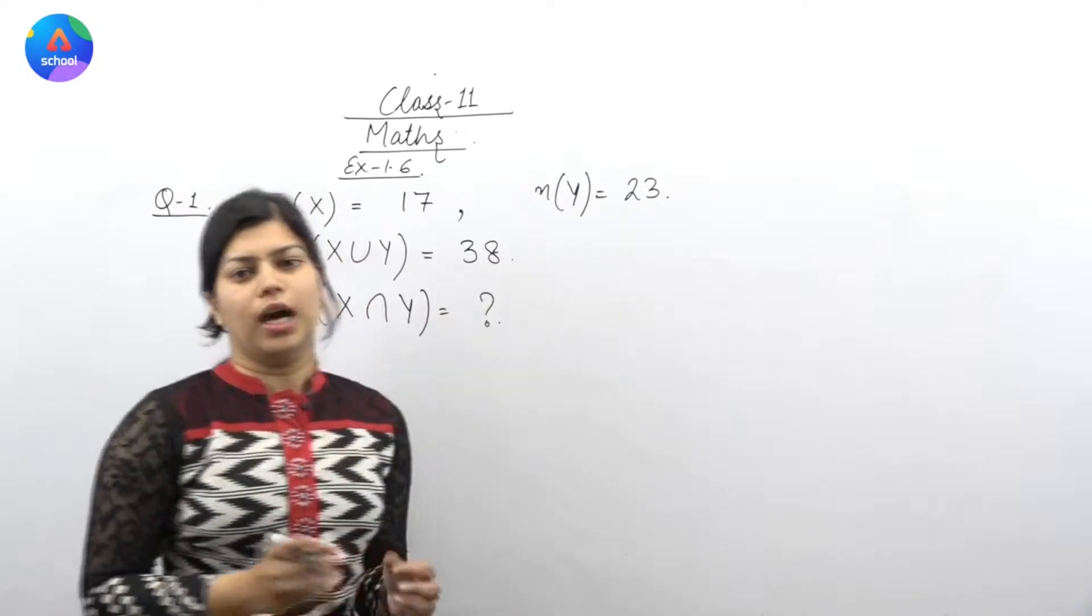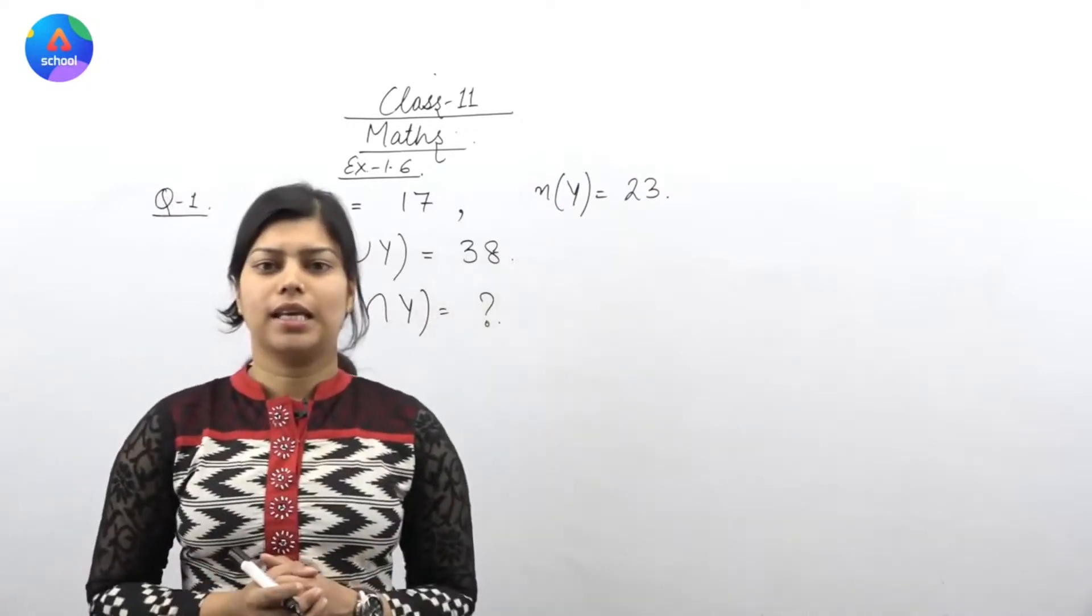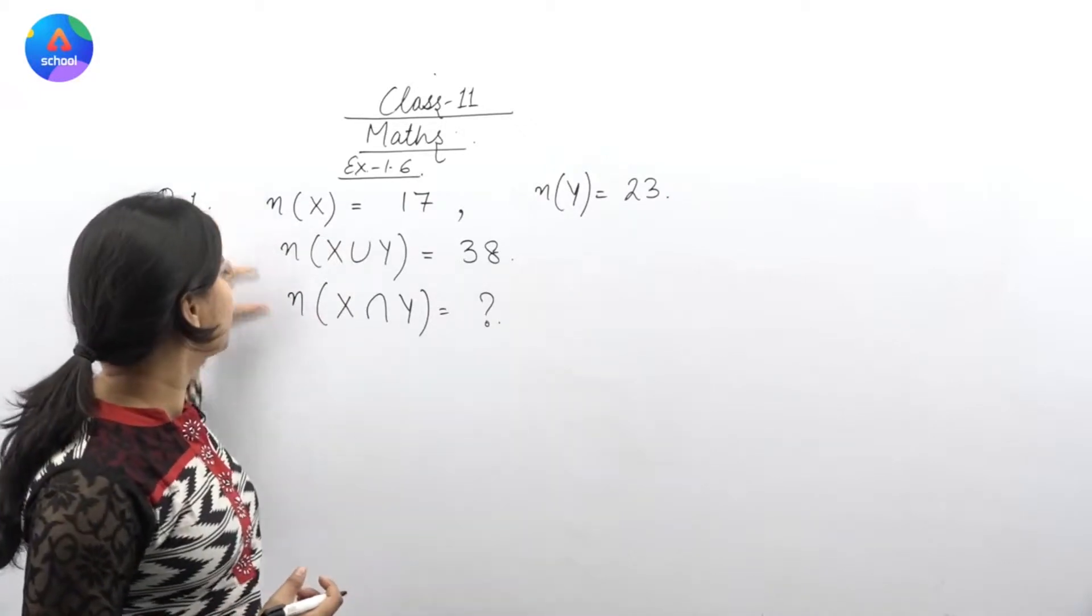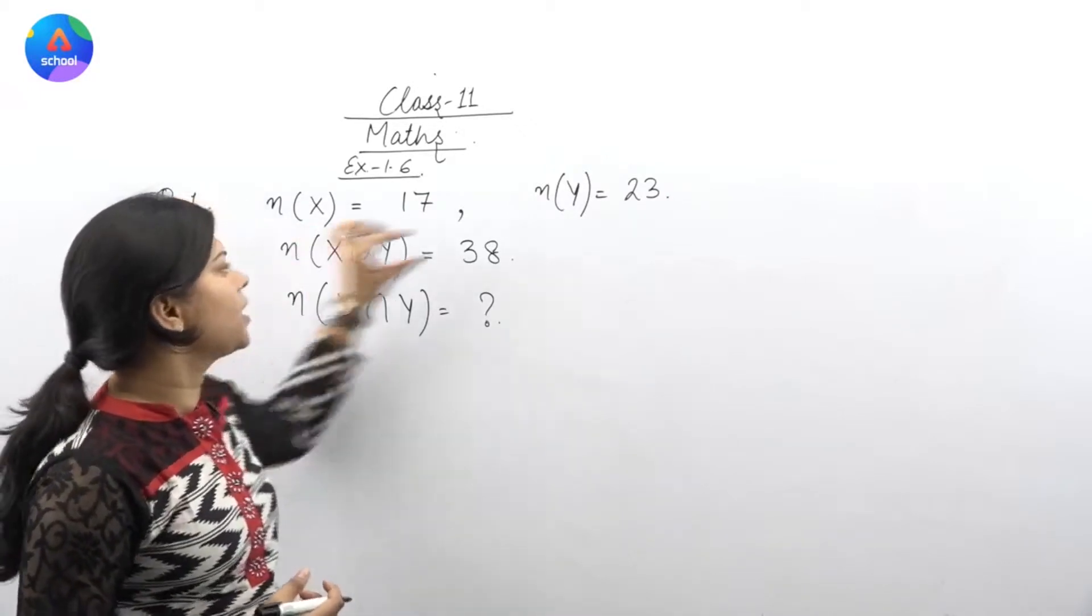In our last lecture, we had discussed that we found out a relation between all these terms. N of X, N of Y, N of X union Y and N of X intersection Y. So, what was the relation?